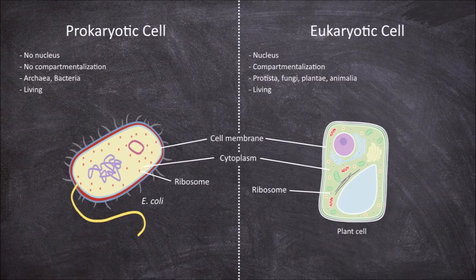The first difference between prokaryotic and eukaryotic cells is the size of them. Prokaryotic cells are very small, around 0.1 to 5 micrometres. Eukaryotic cells are bigger, around 10 to 100 micrometres.